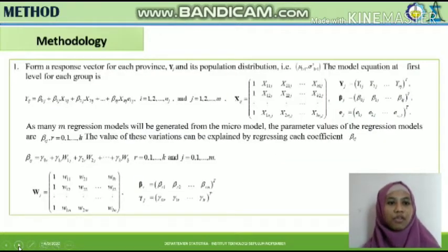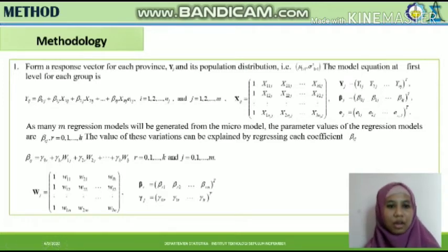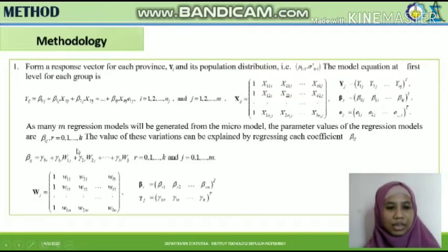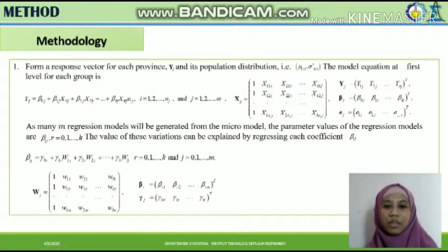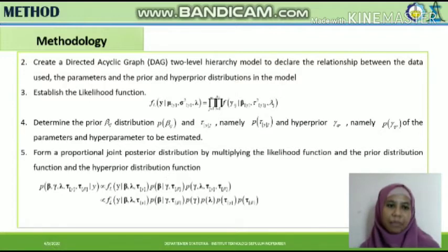For the methodology, first we form a response factor for each province to get the model equation at the first level for each group. After that, from the coefficients in the first model, we build the second-level model through regression. As many as m regression models will be generated from the micro model. The parameter values of the regression model are beta rg, and the variation can be explained by regressing its coefficients to obtain the macro model equation.